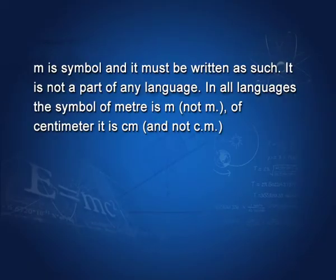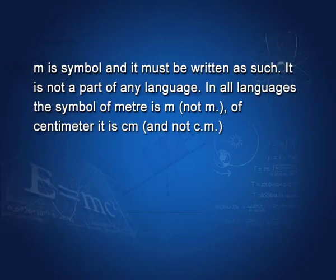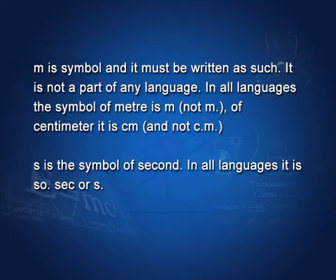I would like to draw your attention to the symbols in the table. M, for example, is a symbol — it is not part of any language and must be written as such. Distance must be expressed in M. In some places people write meter in their own language, for example in Hindi as 'me', but that is not acceptable. In all languages, the symbol of meter is M — not M with a dot. The symbol of centimeter is CM, not C dot M dot. Similarly, small s is the symbol of second in all languages. SEC or S dot are wrong and not acceptable.